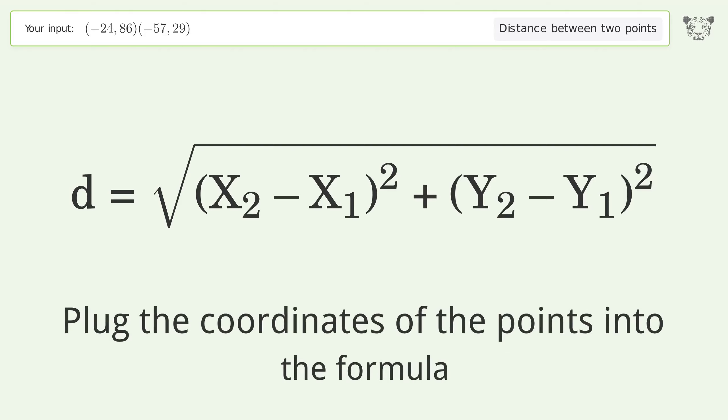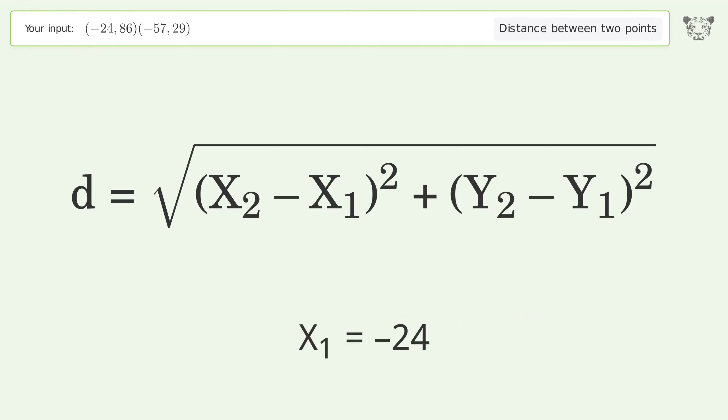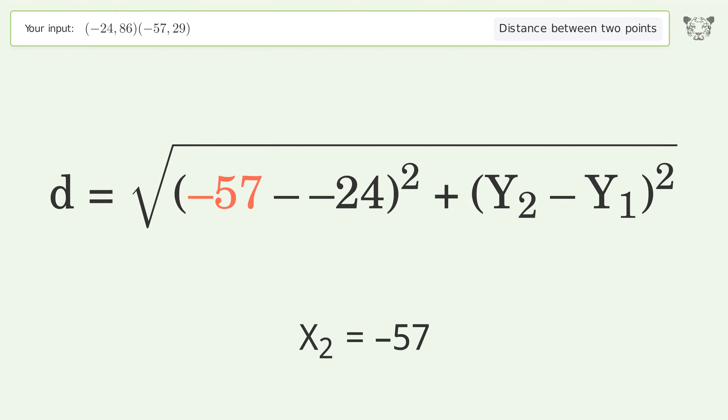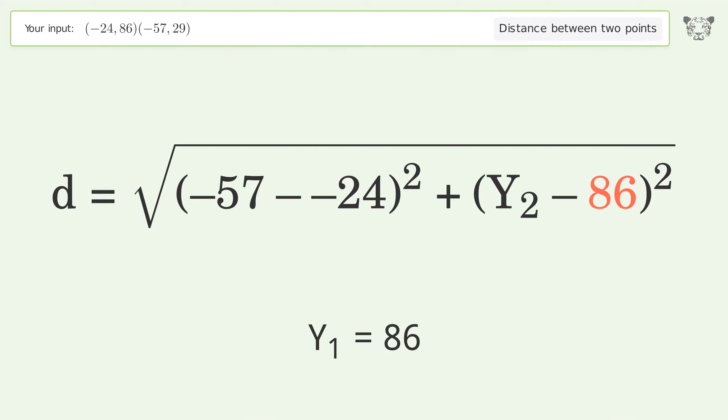Plug the coordinates of the points into the formula. x1 equals negative 24, x2 equals negative 57, y1 equals 86, y2 equals 29.